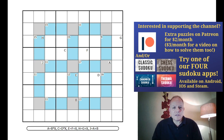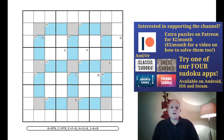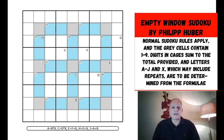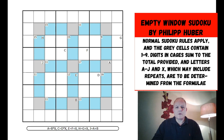Hello and welcome back to Cracking the Cryptic for the second puzzle of today. This is an empty window sudoku. We've published on Patreon today the reward puzzle being solved, so if you're a three-dollar patron or above you can go to Patreon and see the solution to the queen sudoku published earlier in the month. This puzzle is from Philip Huber, who we've featured a couple of times before on the channel.